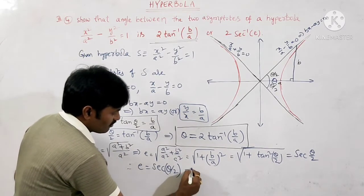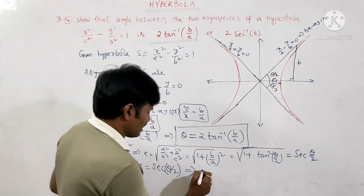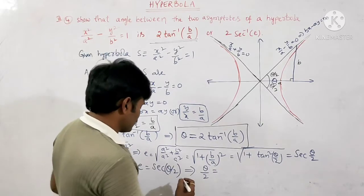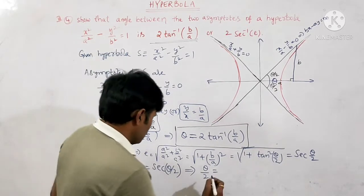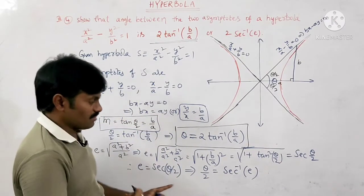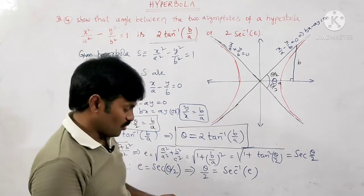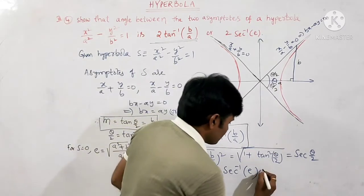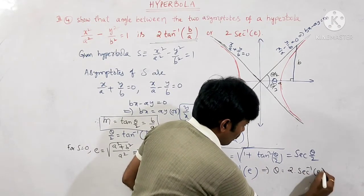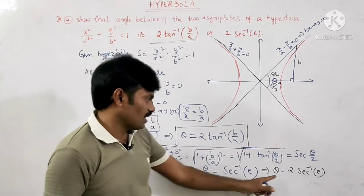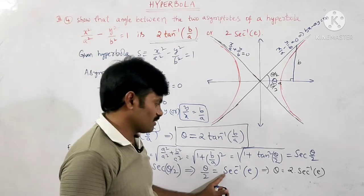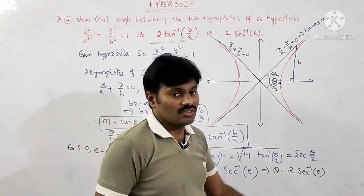From e = sec(θ/2), we want θ as the subject. First, θ/2 = sec⁻¹(e). Therefore, θ = 2·sec⁻¹(e). This is the most important formula and can be used directly to solve problems.